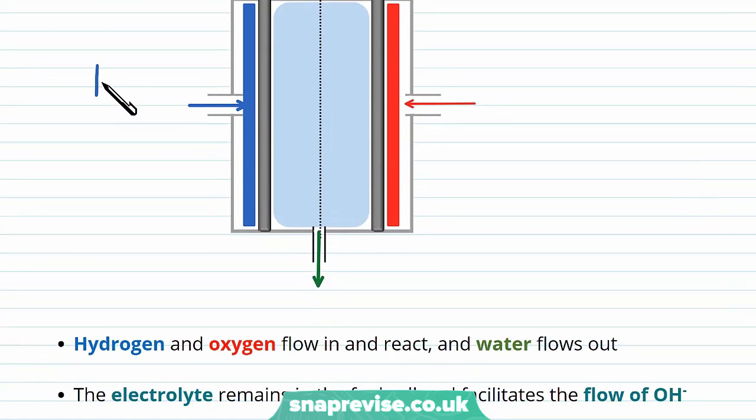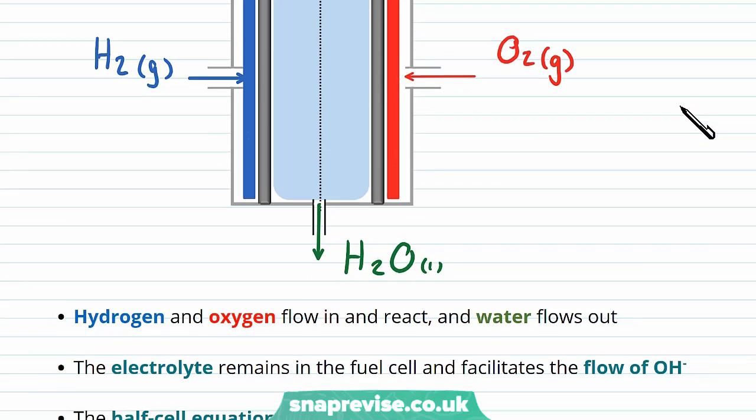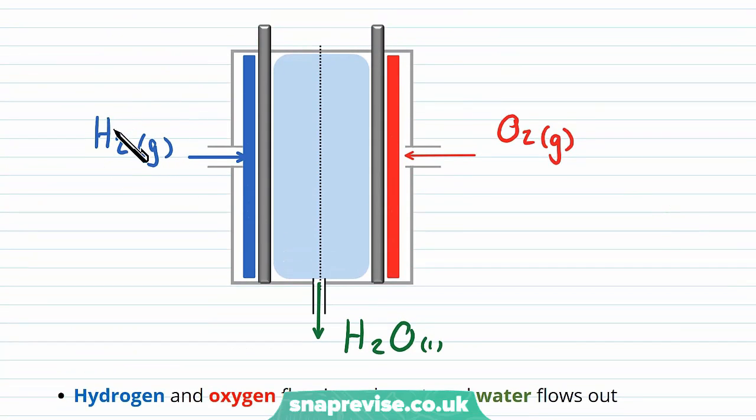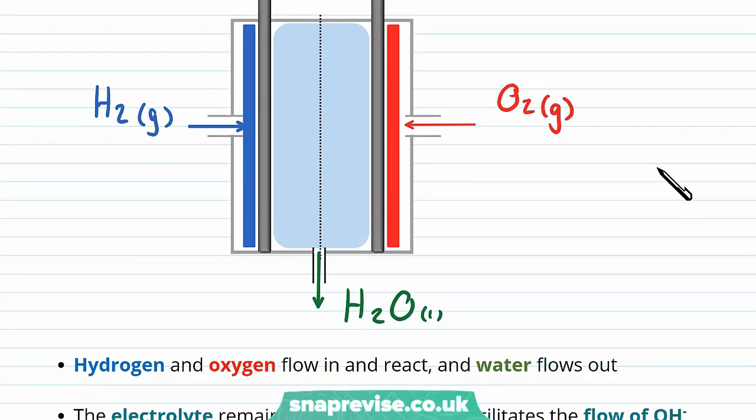So firstly, the fuels which flow in are hydrogen, H2 gas, and oxygen, O2 gas. These react within the cell and form water in the chemical reaction that generates electricity. We effectively have two half cells in this system. One half cell that deals with the reaction with hydrogen, and one half cell that deals with the reaction with oxygen.